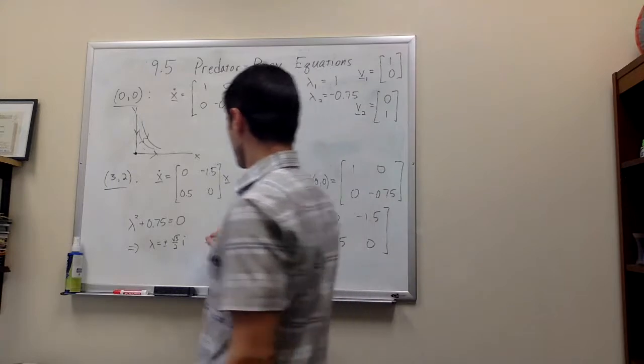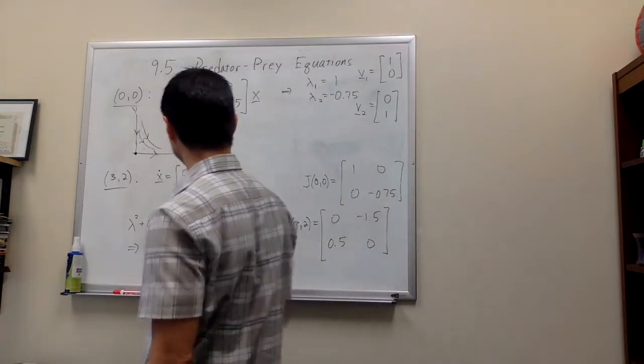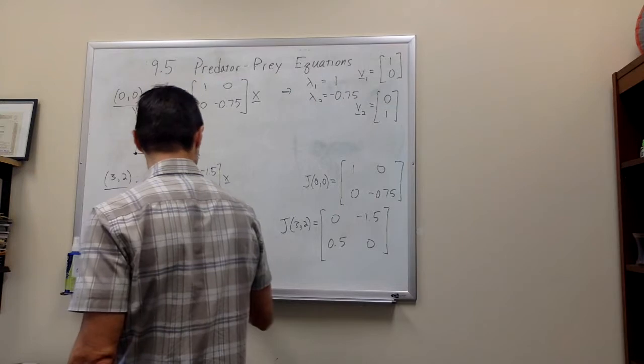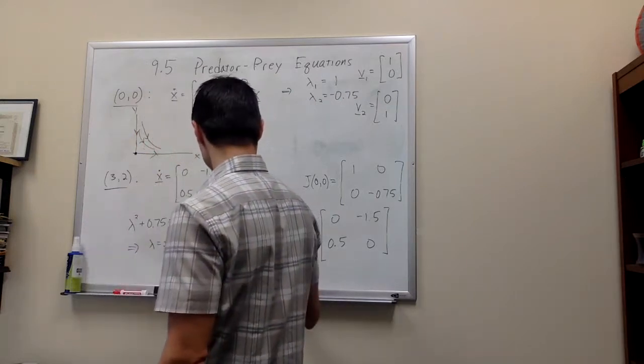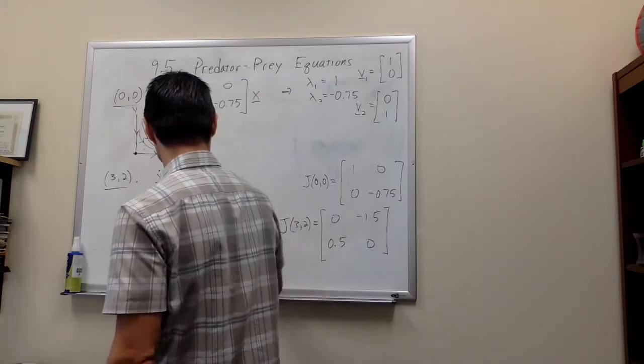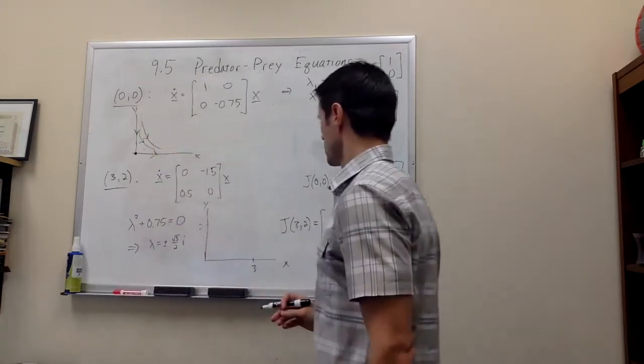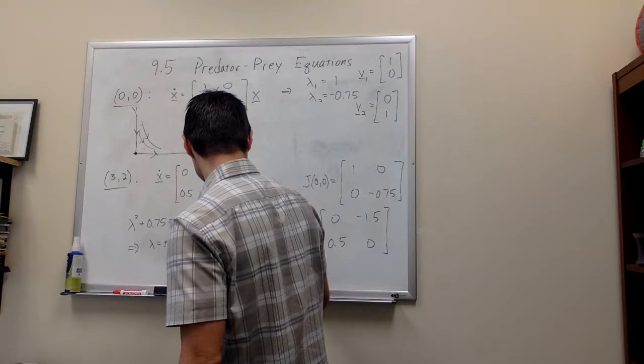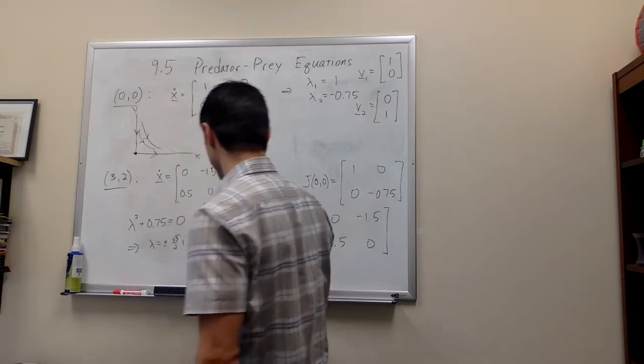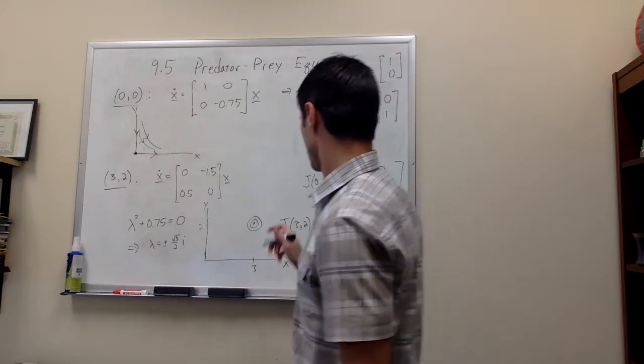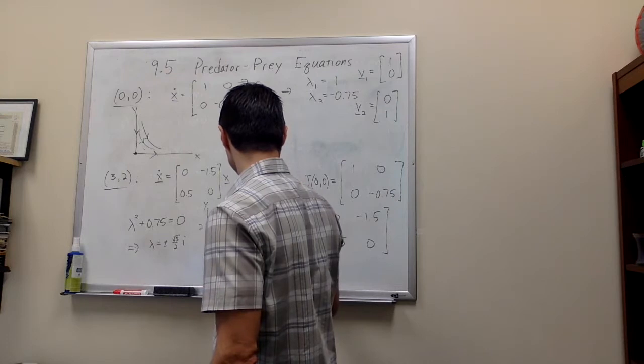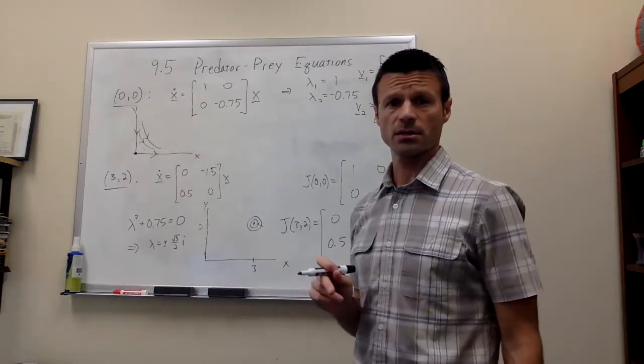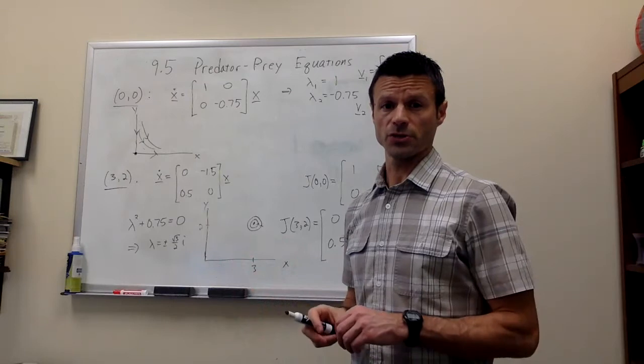So here, this leads to a center. And if we were to look closely, and I encourage you to actually look at figures in the book or to use p-plane, if we go to the point 3, 2 in the phase portrait, we would get something that looks like a center. And the trajectories actually are going counterclockwise. So this is how we would do what we would call the linearization of the critical points.